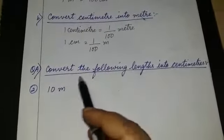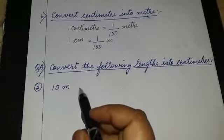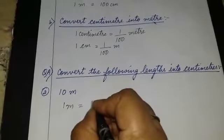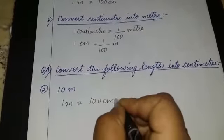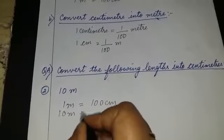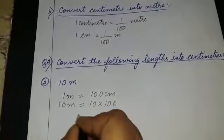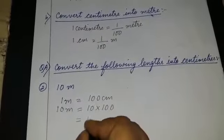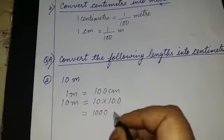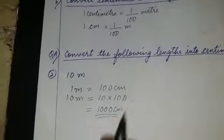Question A: convert the following lengths into centimeter. The first question is 10 meter — we have to convert it into centimeter. We write: 1 meter is equal to 100 cm, therefore 10 meter is equal to 10 × 100. You can multiply by 100 by adding two zeros after 10, giving 1000 centimeter. So the answer is 1000 centimeter.